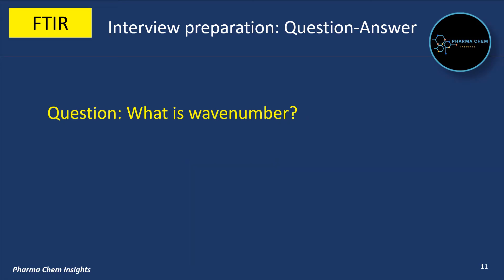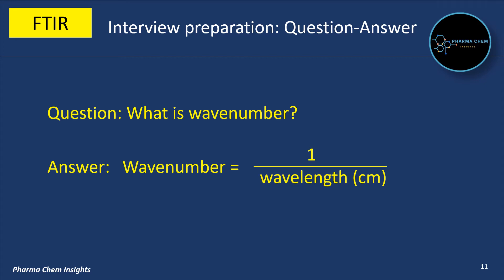What is wave number? Wave number is equal to 1 divided by wavelength in cm.